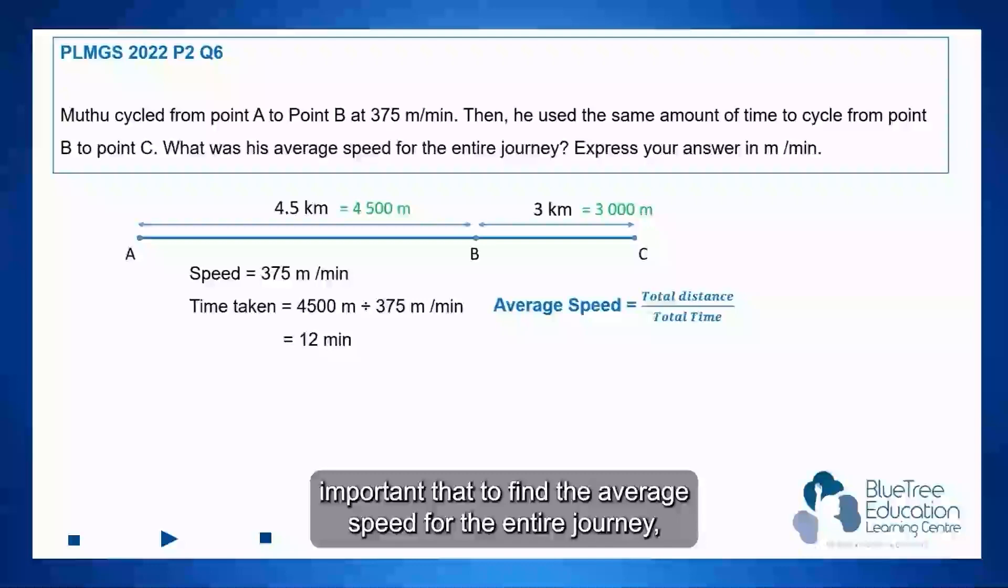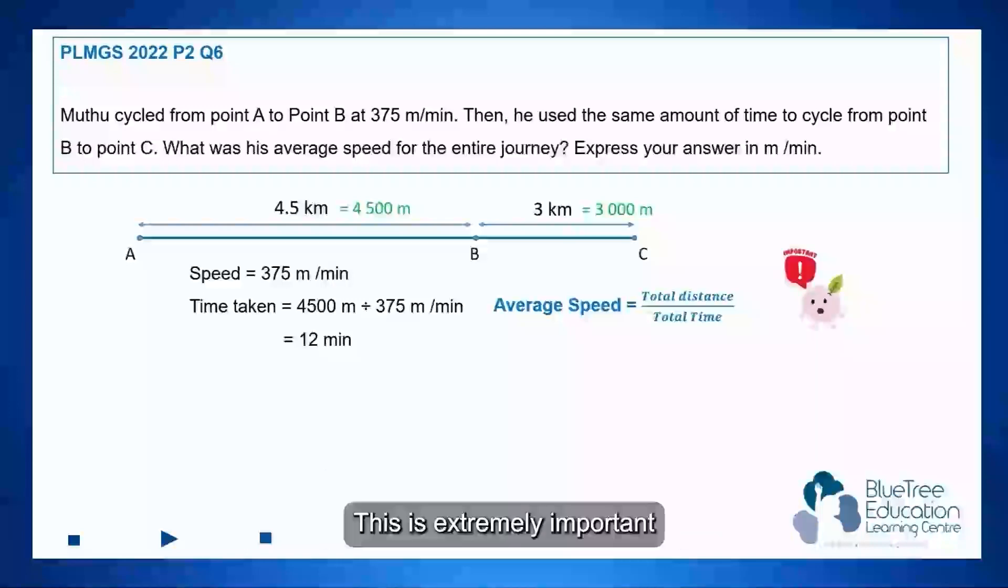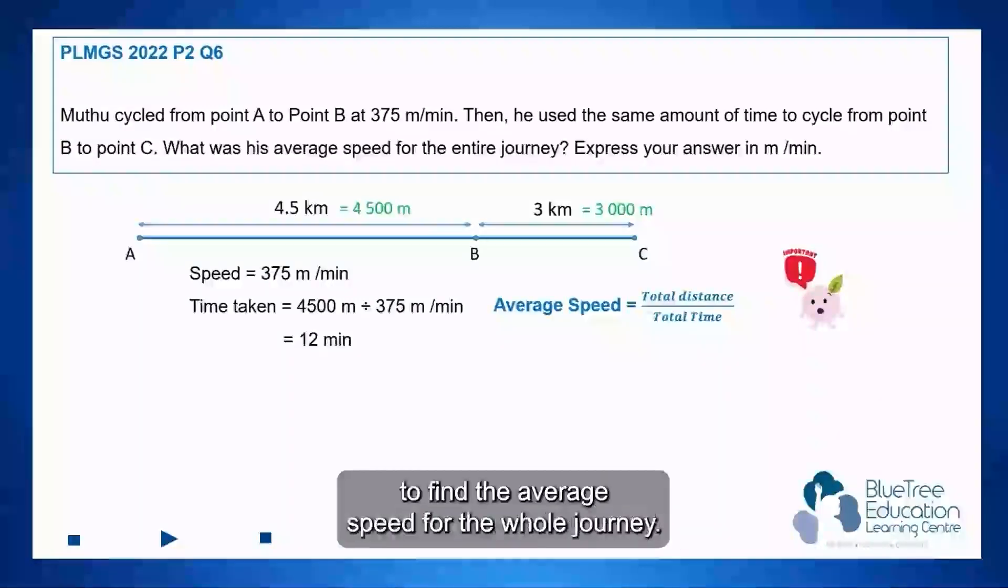It is important that to find the average speed for the entire journey, we must take the total distance divided by the total time. This is extremely important to find the average speed for the whole journey.